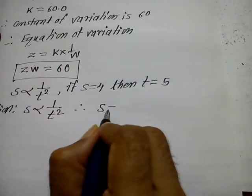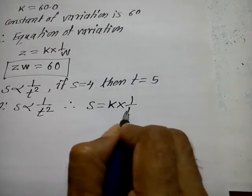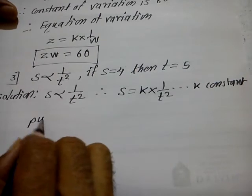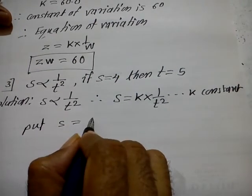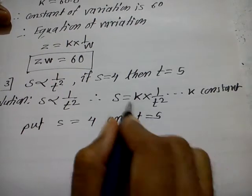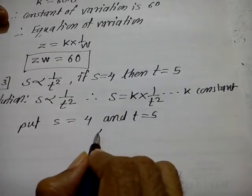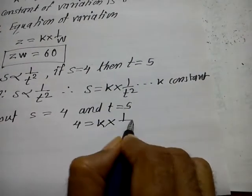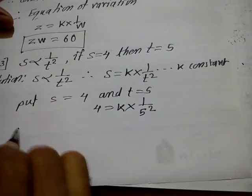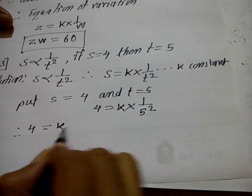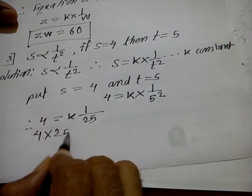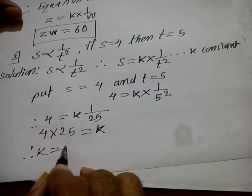s is inversely proportional to t squared. Therefore s is equal to K into 1 upon t squared, where K is constant. Putting the values: s is equal to 4 and t is equal to 5. So 4 is equal to K into 1 upon 5 squared, which is 1 upon 25. Therefore 4 into 25 is equal to K, so K is equal to 100.